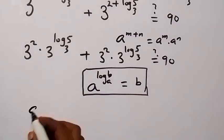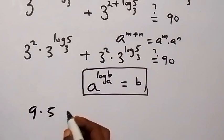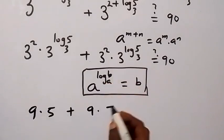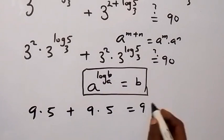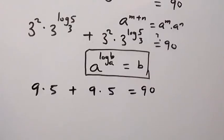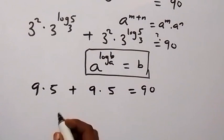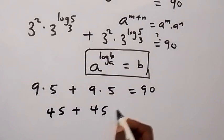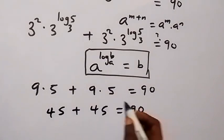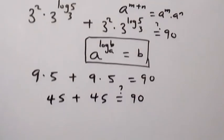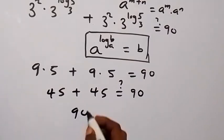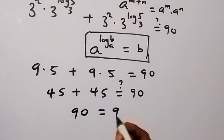So we have 3 squared times 5 plus 3 squared times 5. Since 3 squared equals 9, this becomes 9 times 5 plus 9 times 5, which is 45 plus 45, equaling 90.